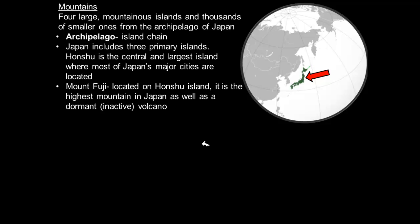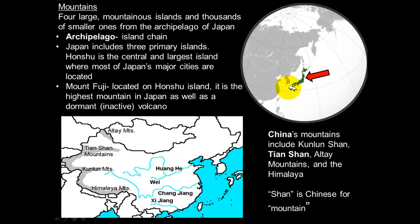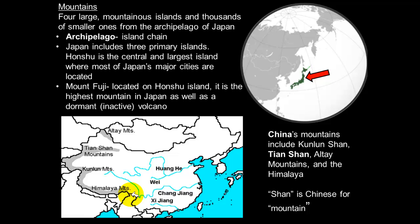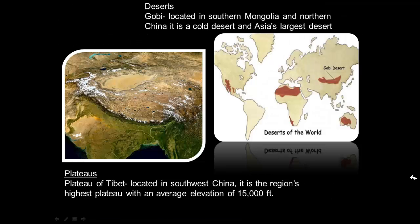Mount Fuji is located on Honshu Island — it is the largest mountain in Japan and also an inactive volcano, meaning Japan's major cities are located near an inactive volcano. Moving to the mountains of China: the word for mountain in Chinese is 'Shan,' so you'll see 'Shan' after each mountain name. China's mountains include the Kunlun Shan, the Tian Shan, and the Himalayas, which form the southern border where China meets India.